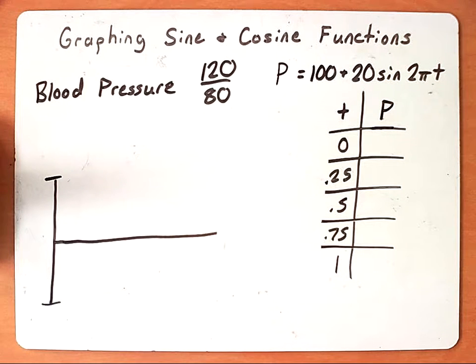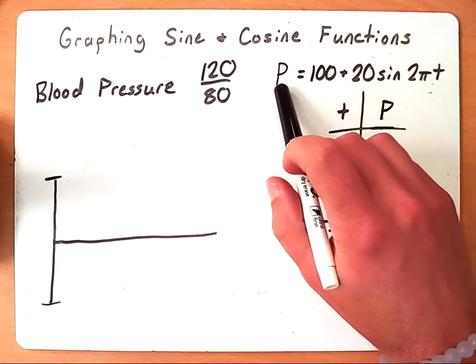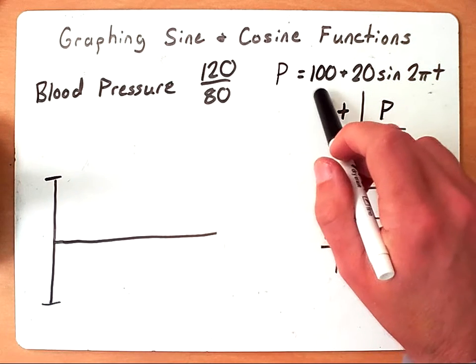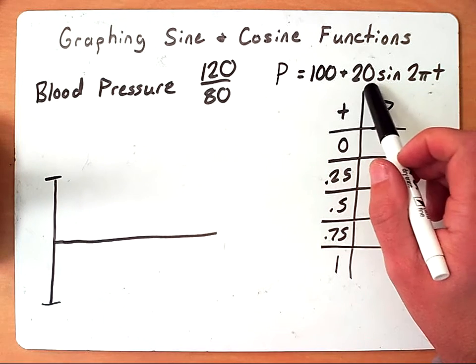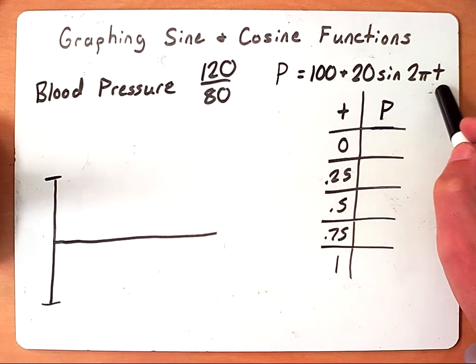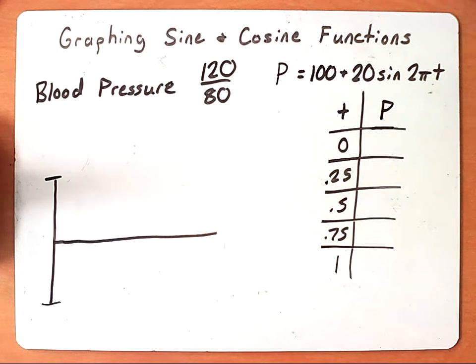So they give us a formula to find the blood pressure at any given interval. They say P, which is going to be the pressure, equals 100 plus 20 times sine of 2π T, where T is going to be our time in seconds.